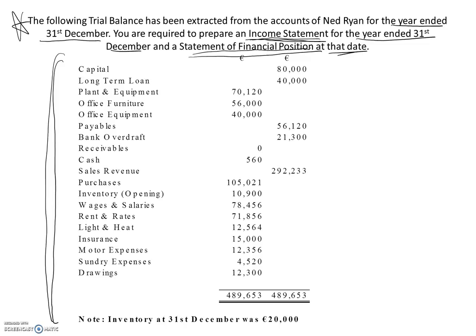Starting at the top of the question, we have capital which goes into the balance sheet. Long term loan, balance sheet. Now we have three items here together: plant and equipment, office furniture, and office equipment. They are all assets in the balance sheet. Payables and bank overdraft are both liabilities — you can see they are on the credit side. We have receivables which would be an asset in the balance sheet; in this case it is zero, but we will put it in our list anyway. We have cash, which is an asset in the balance sheet. Sales revenue goes into the trading account, purchases goes into the trading account, and the inventory goes into the trading account.